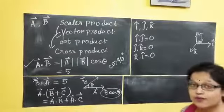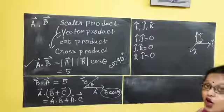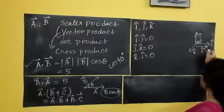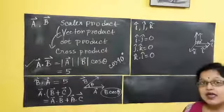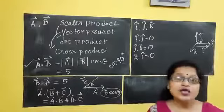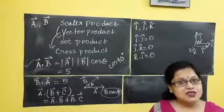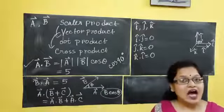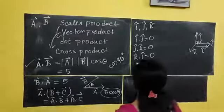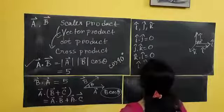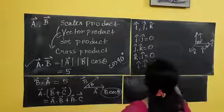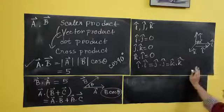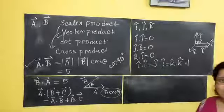If I do I dot I — one vector I along another parallel vector I — the angle between two parallel vectors is 0 degrees. Cos 0 equals 1, so I dot I always gives 1. Remember: I dot I equals J dot J equals K dot K equals 1.